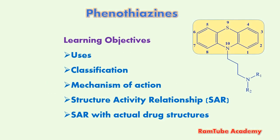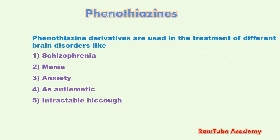In this tutorial we are going to discuss the phenothiazine class of drug molecules. This is the general structure of the phenothiazine molecule, and the heterocyclic ring shown in the square box is the phenothiazine ring. Today's learning objectives are: first, the uses of phenothiazines; then their classification; then the mechanism of action; then the structure-activity relationship; and finally, SAR with actual drug structures.